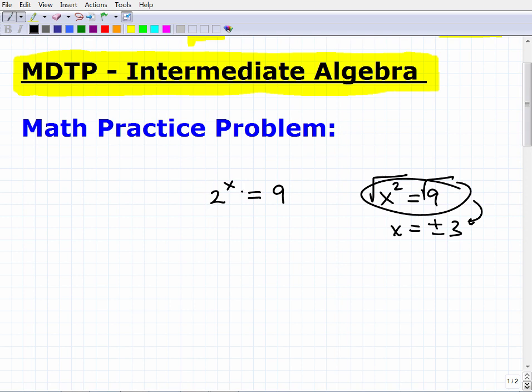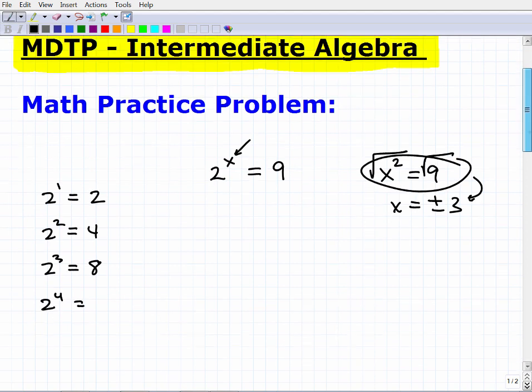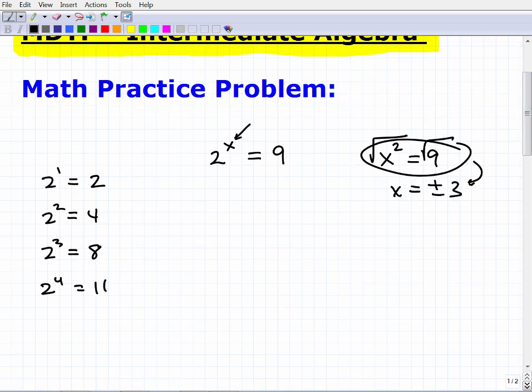What's going on is this is what we call an exponential equation. So I'm trying to figure out 2 to what power is equal to 9. So let's just kind of think about that. 2 to the first power is just 2, right? 2 squared means 2 times 2, so that's 4. 2 to the third power is 2 times 2 times 2, so that's 8. And we have 2 to the fourth power is 2 times itself 4 times. So that's 2 times 2 times 2 times 2. That's 16.